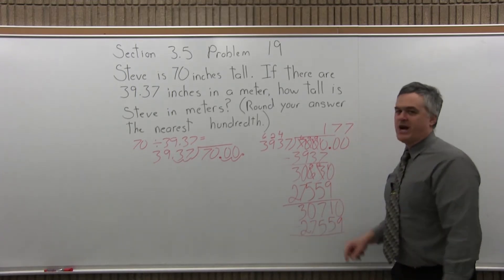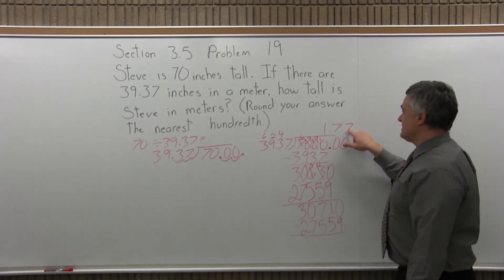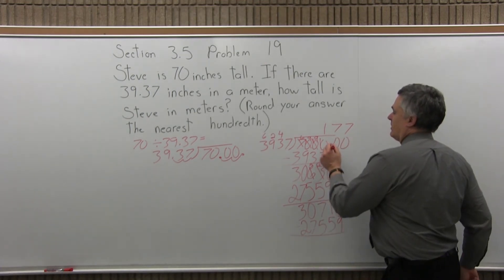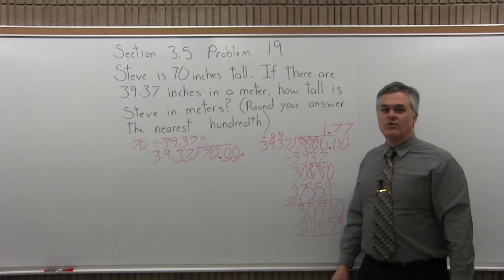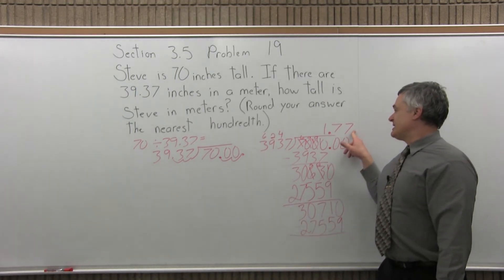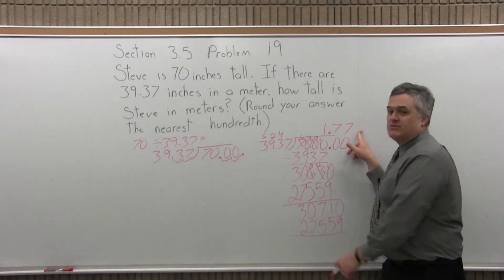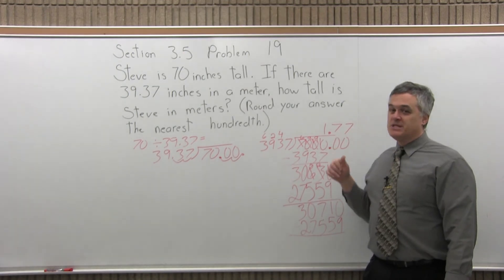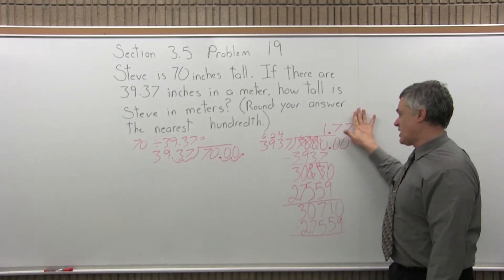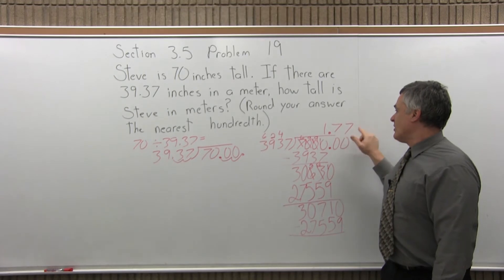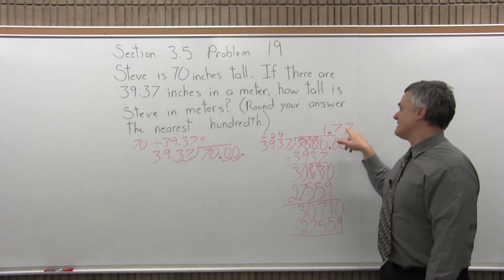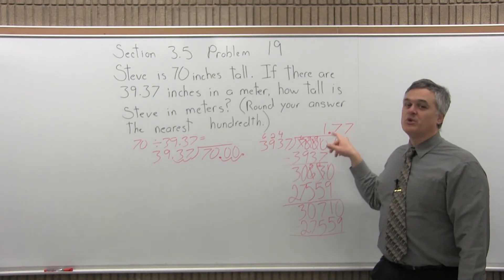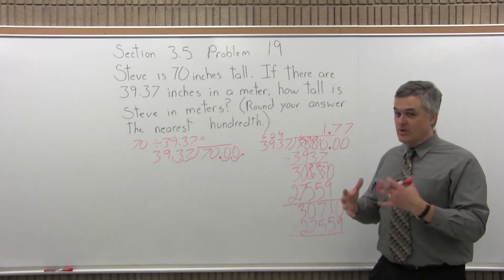Now the result for the subtraction will be different. Now this is to the nearest hundredth. When I bring my decimal straight up, I have 1.77. The question is, the next digit over, will the next digit over when I do this problem a little bit further, will it be 0 through 4, which means I'll stop at 1.77, or will the next digit over be 5 through 9? If that's the case, my answer to the nearest hundredth will be 1.78. So I do have to go a little bit more.